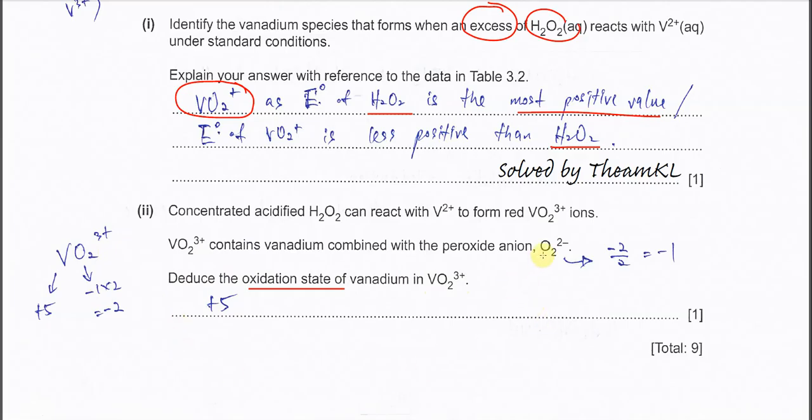I remember because this one is, I already told you. In VO₂³⁺, it's actually vanadium combined with peroxide anion. Peroxide anion means the oxygen oxidation state is negative 1. So negative 2 over 2, you get negative 1.